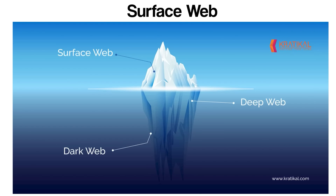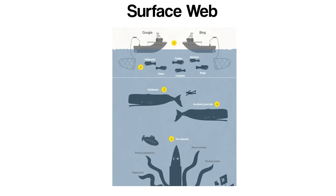The Surface Web, also known as the Visible or Indexed Web, represents the first and most accessible layer of the Internet. It encompasses all websites and webpages that are indexed by traditional search engines such as Google, Bing, and Yahoo. This means that the content within the Surface Web can be easily found and retrieved by using search engines, making it the most familiar and widely used portion of the Internet by the general public.